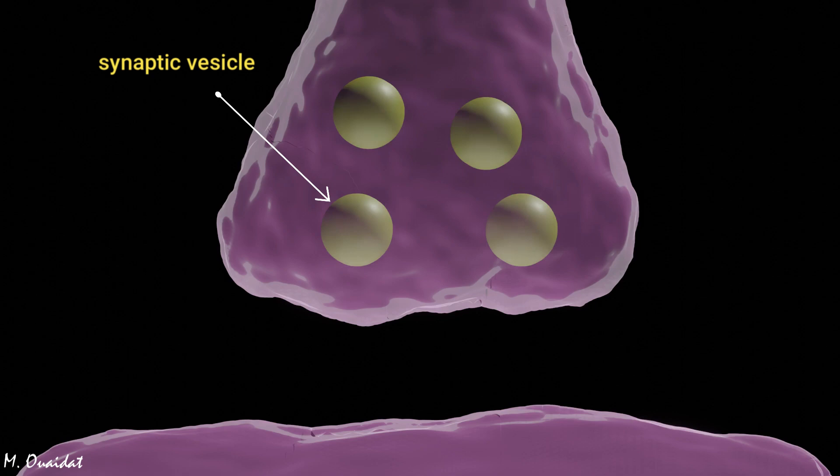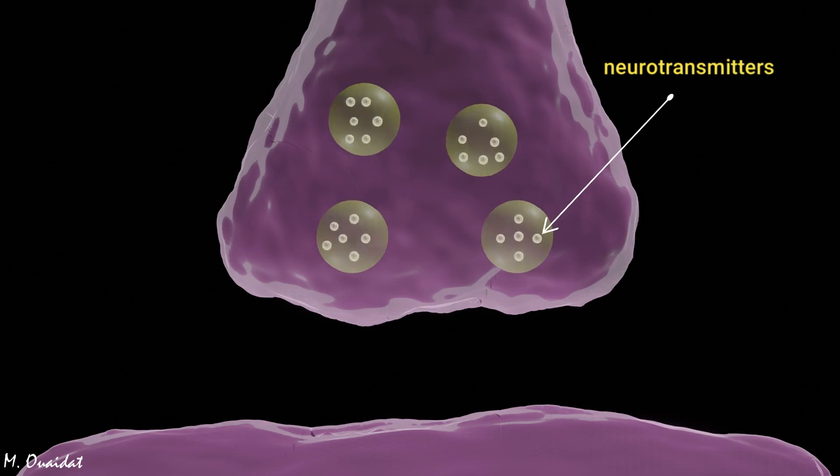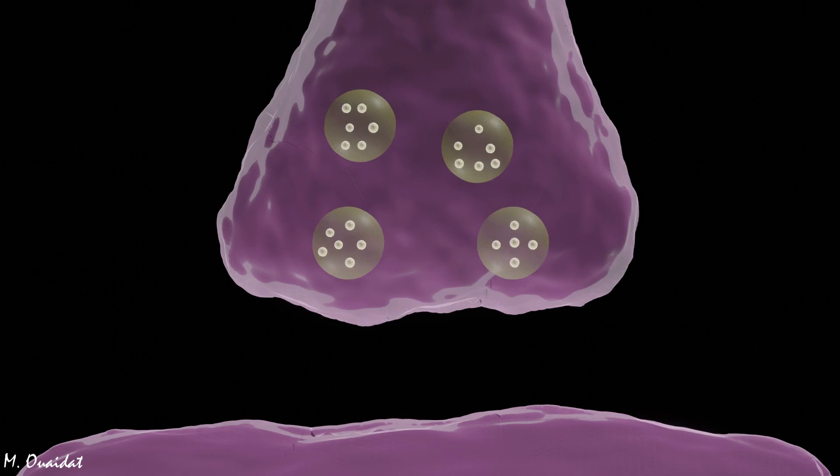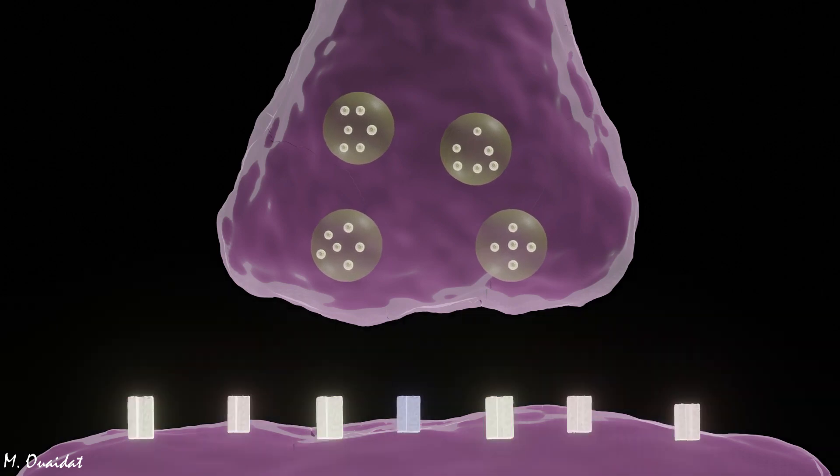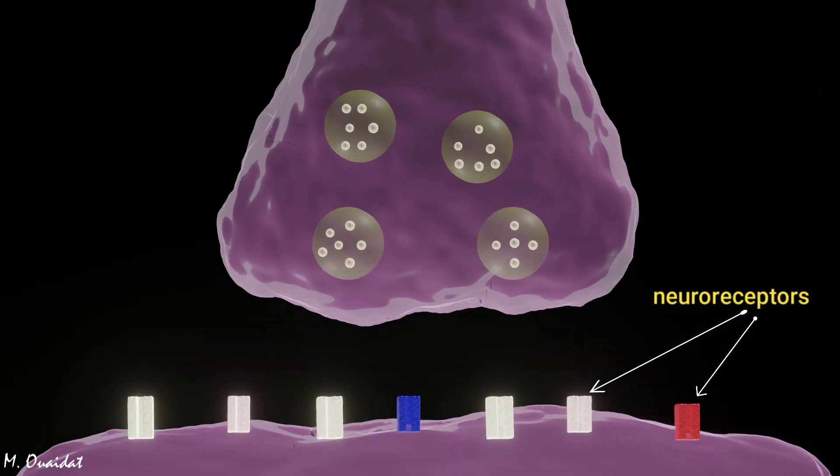It is characterized by the presence of synaptic vesicles containing chemical substances called neurotransmitters. The postsynaptic element corresponds to the cell membrane of another cell and is characterized by the presence of neurotransmitter receptors.